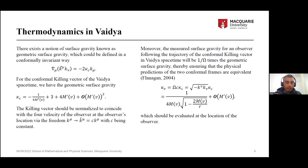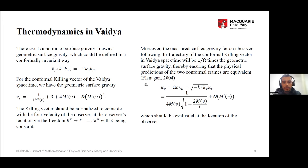There also comes a notion of geometric surface gravity. The horizon associated with the conformal Killing vector is the same as the event horizon, and the surface gravity associated with it is the geometric surface gravity. We calculate this geometric surface gravity and obtain a specific value. However, since we used a conformal Killing vector which is not normalized, we must normalize the conformal factor and the conformal Killing vector, and multiply by the conformal factor to get the physical surface gravity in conformal spacetime. Taking the limit as r goes to infinity, we get the temperature for the Vaidya spacetime.